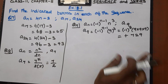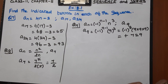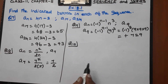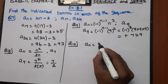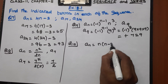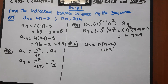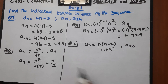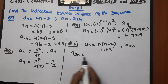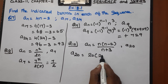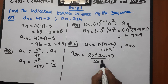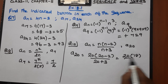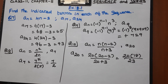Question Number 10. Here an equal to n into n minus 2, divided by n plus 3. We need to find the value of a20. Substituting n equal to 20: 20 into 20 minus 2, divided by 20 plus 3. That gives 20 into 18, divided by 23.